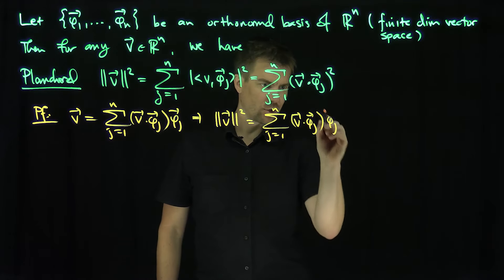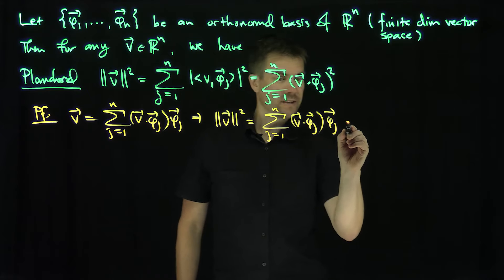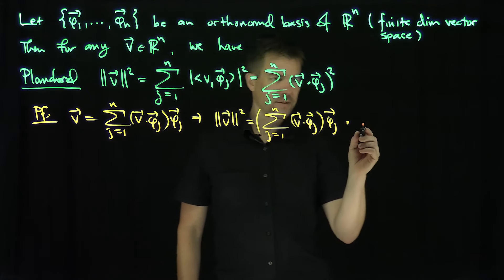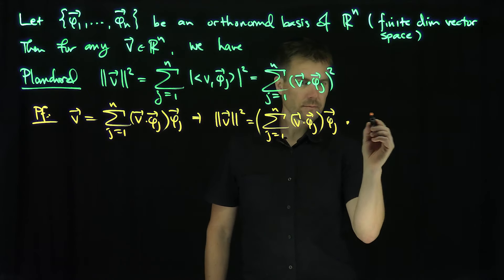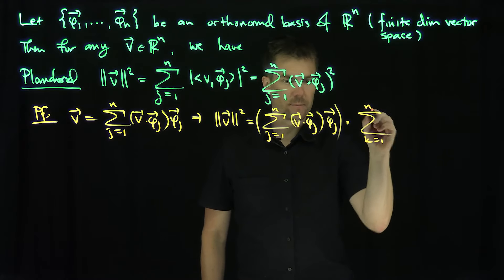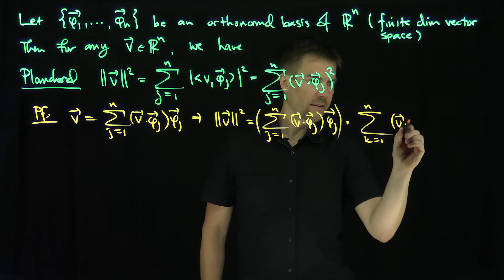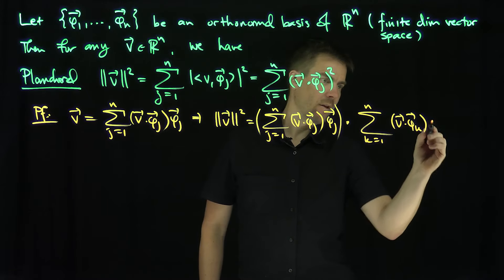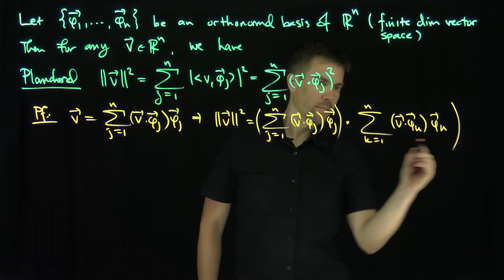Dot what? Dot the sum k goes from 1 up to n of v dot phi_k times phi_k.